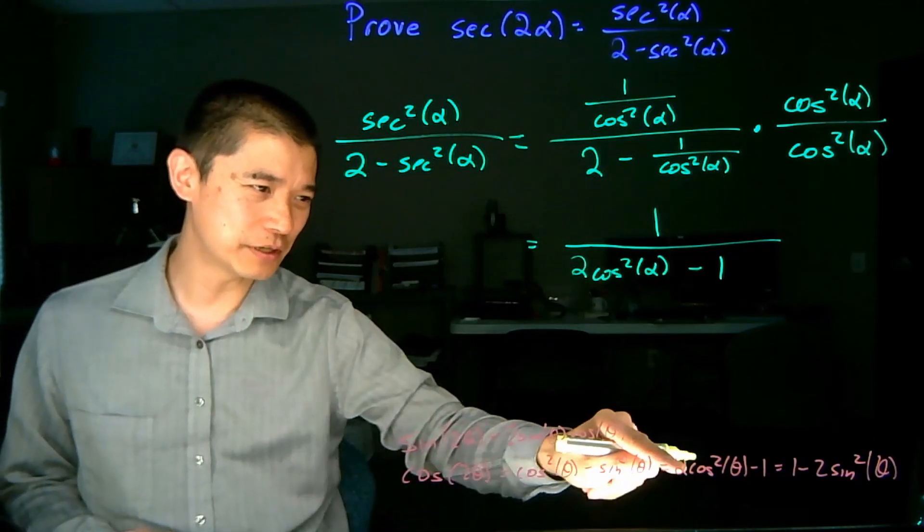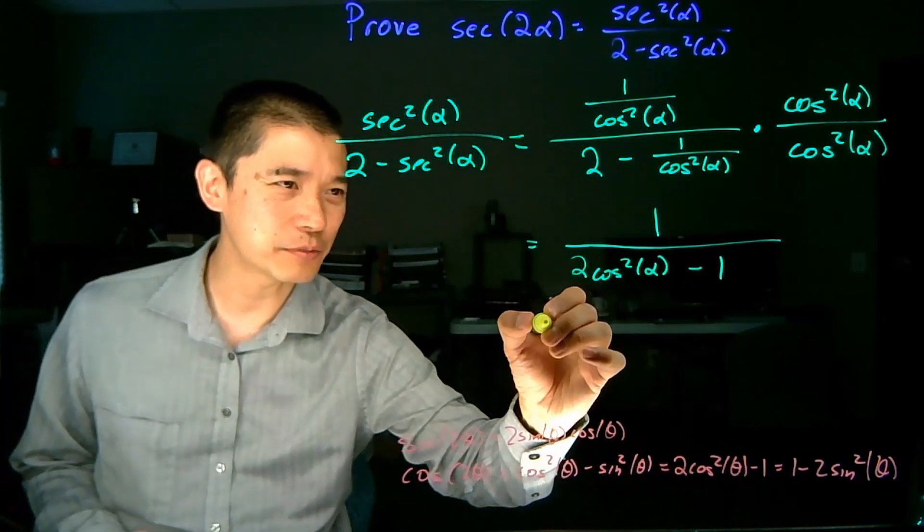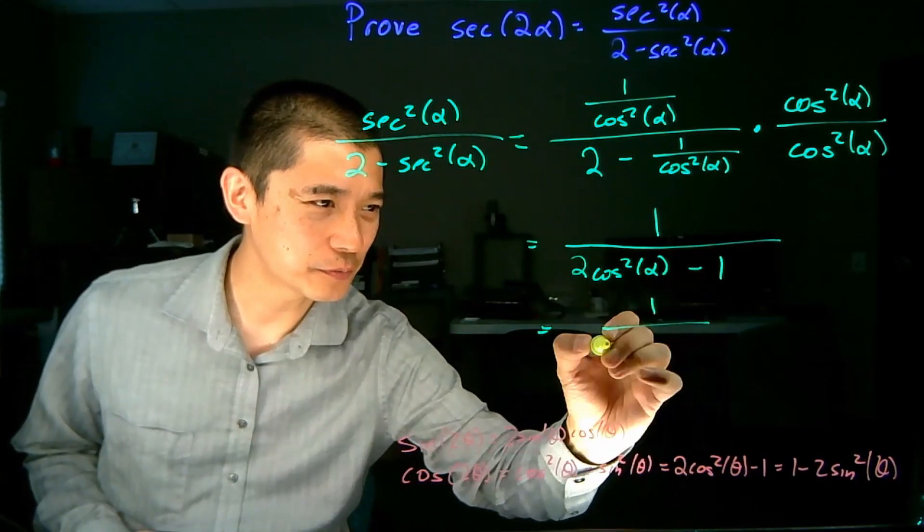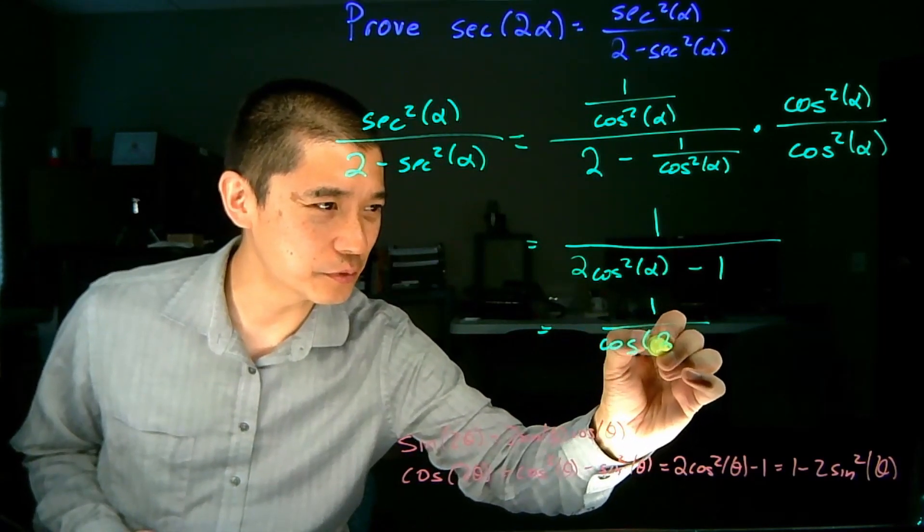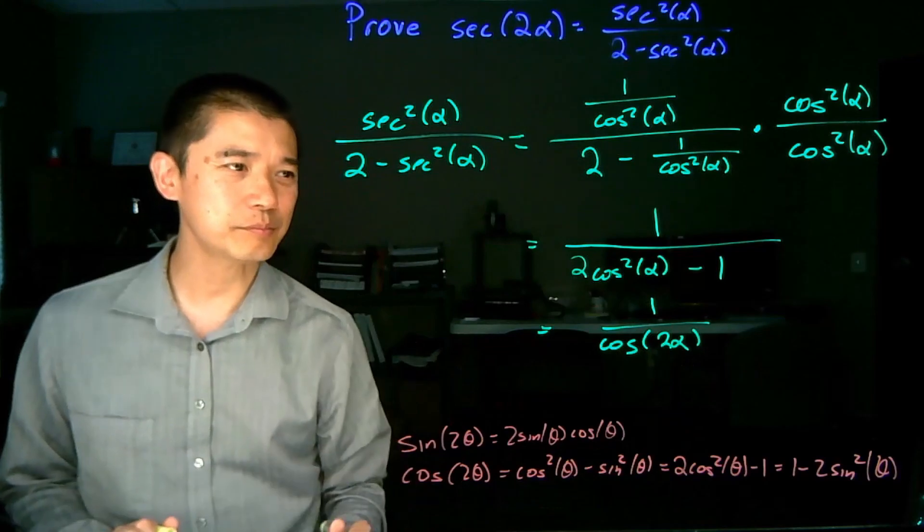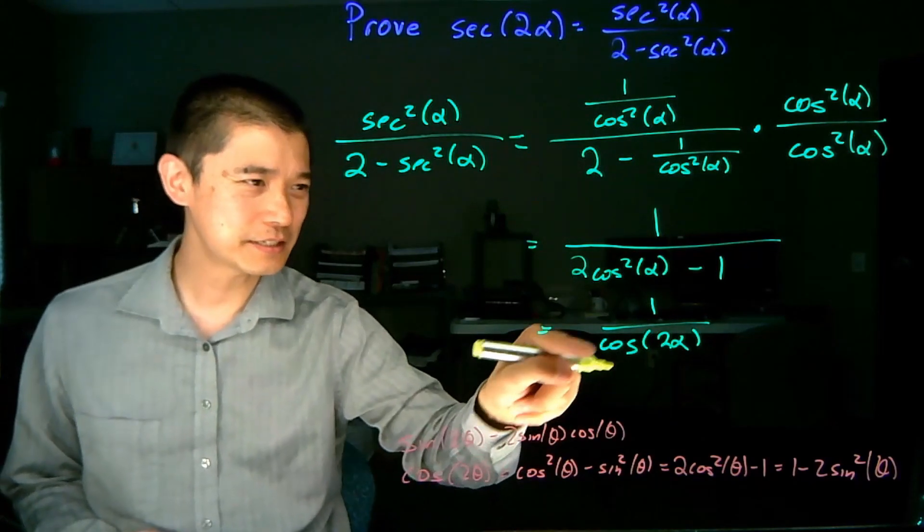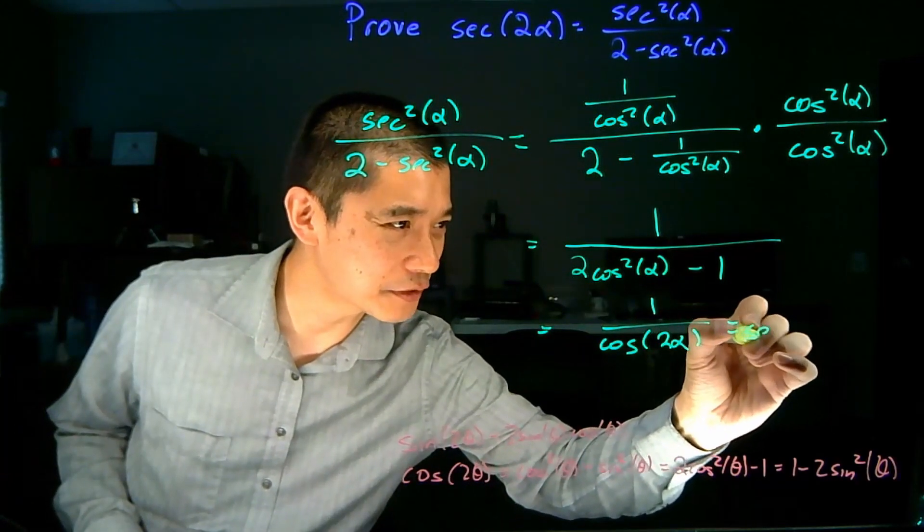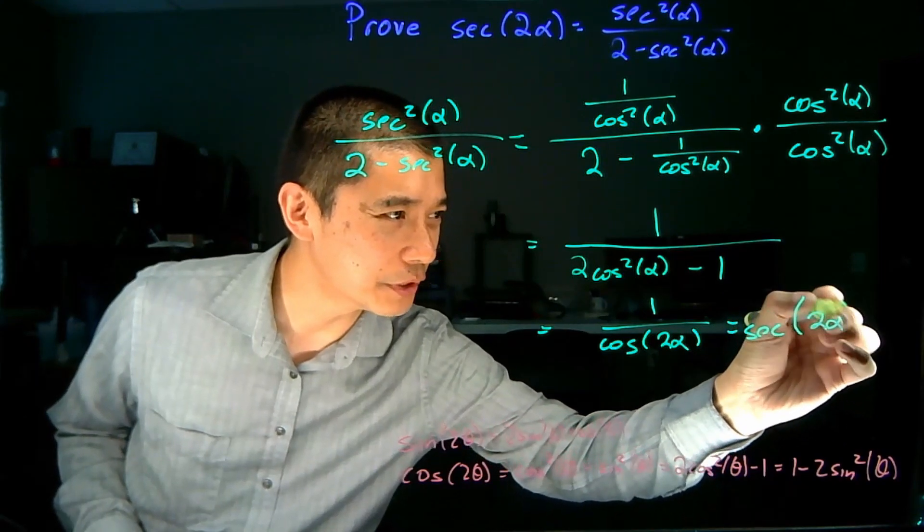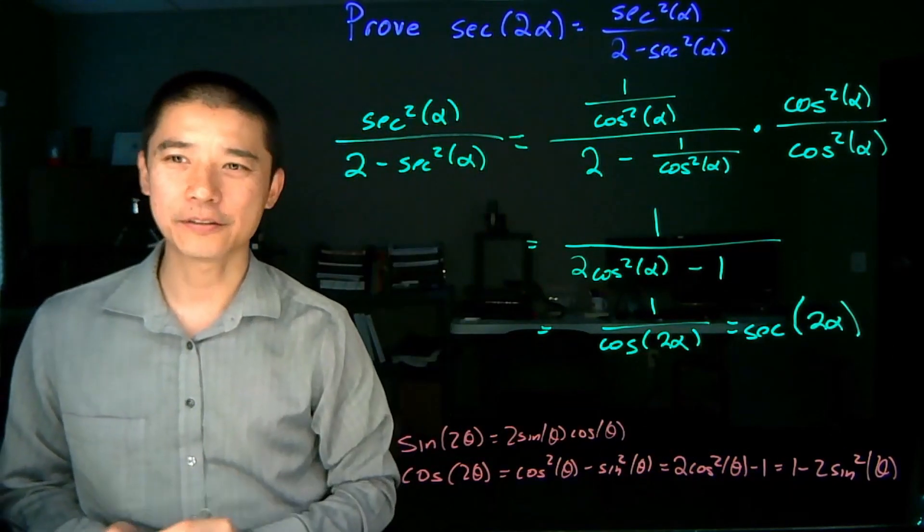And now things are starting to look familiar, 2 cos squared alpha minus 1, 2 cos squared theta minus 1. So this is 1 over cos of 2 alpha. And once we recognize this as a secant function, we are done. We've made it to the other side of the equation.